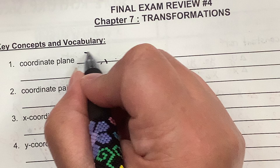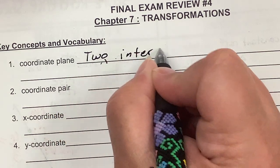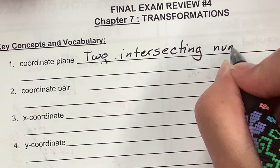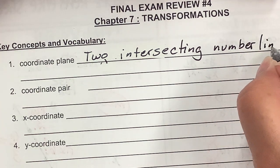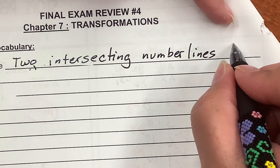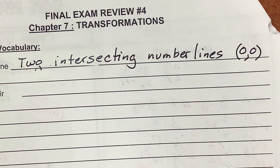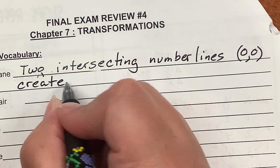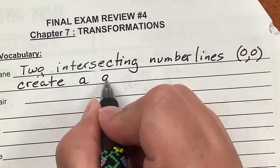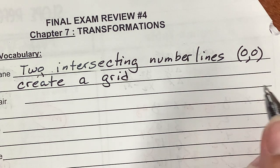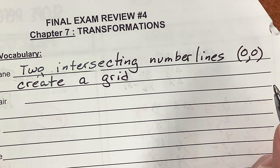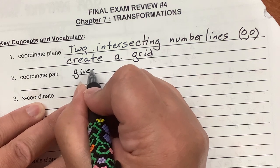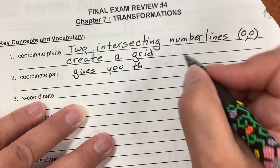I usually think of a coordinate plane as two intersecting number lines. And they intersect at the point zero, zero. Now, those two intersecting number lines create a grid that you can graph on.